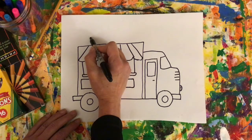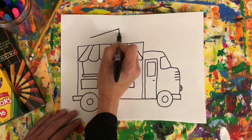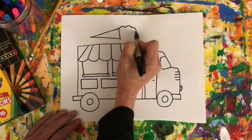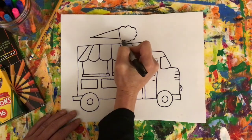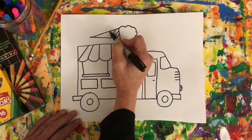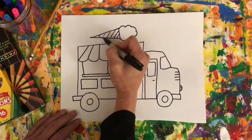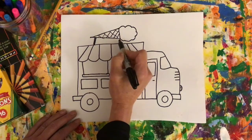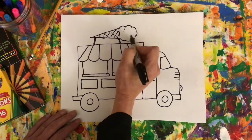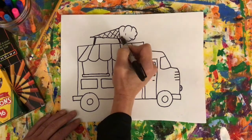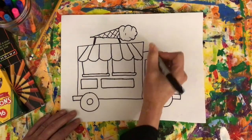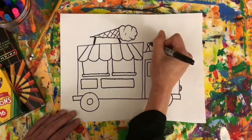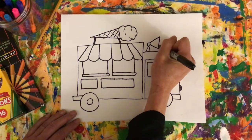So maybe I'll put my ice cream cone on the side. And then I'll put my cone to hold it. Maybe I want to have a little bit of a megaphone at the top to announce to everybody that I'm coming through the neighborhood.